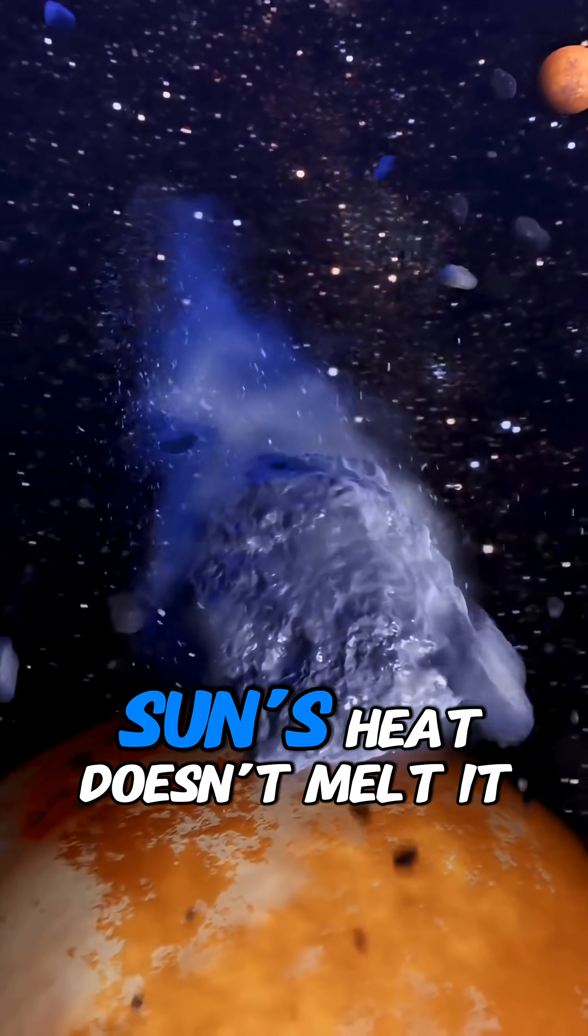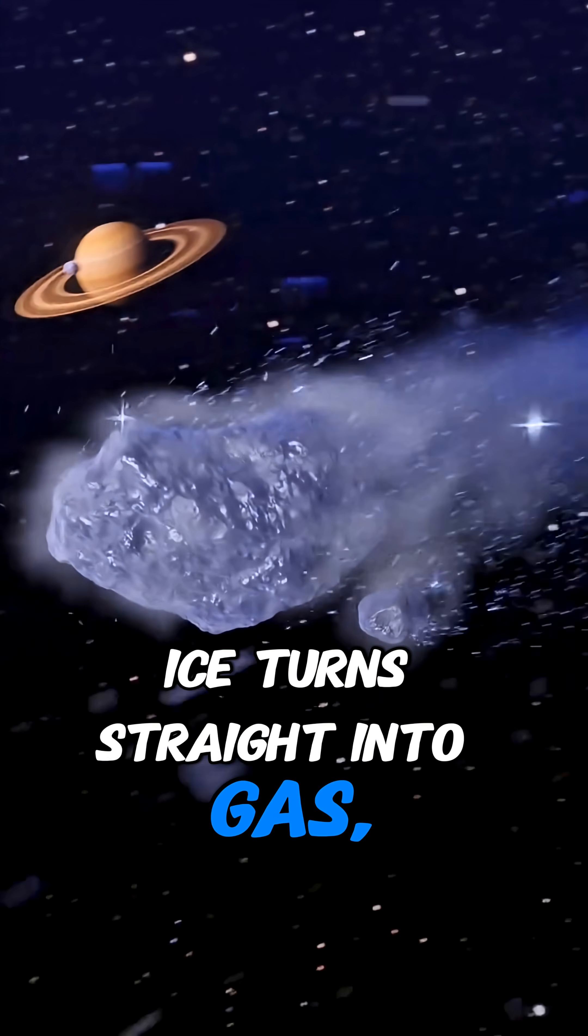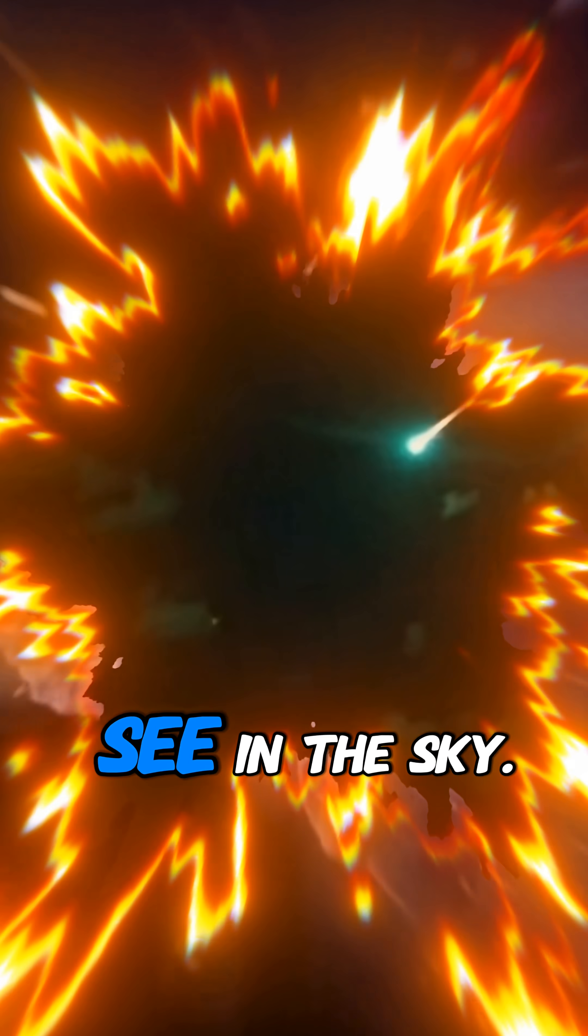As it gets closer, the Sun's heat doesn't melt it, it activates it. Ice turns straight into gas, creating the glowing tail we see in the sky.